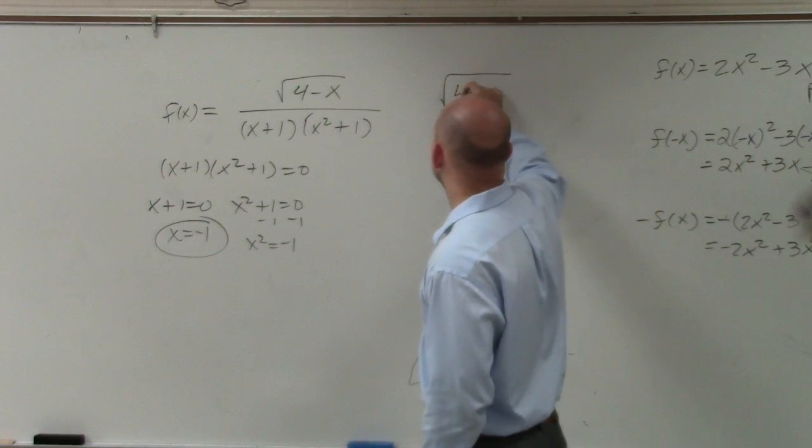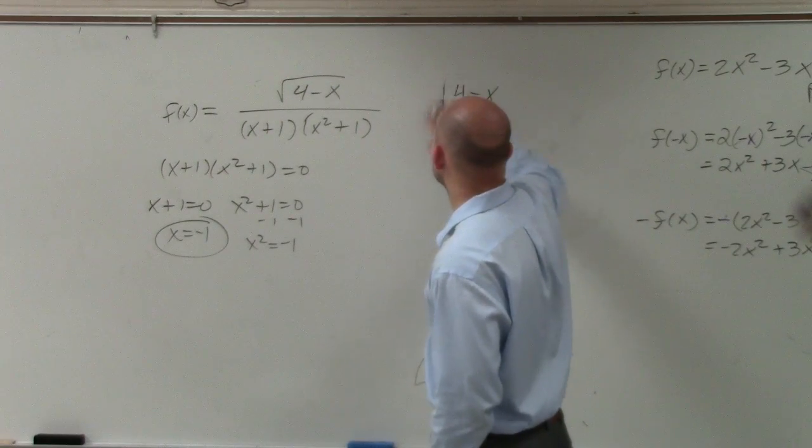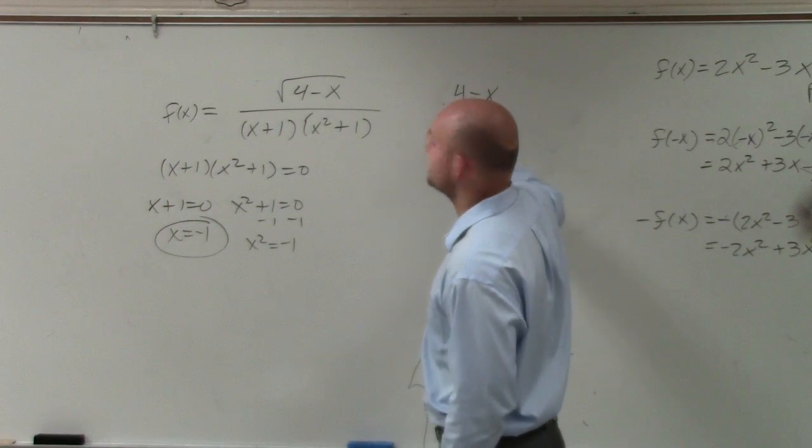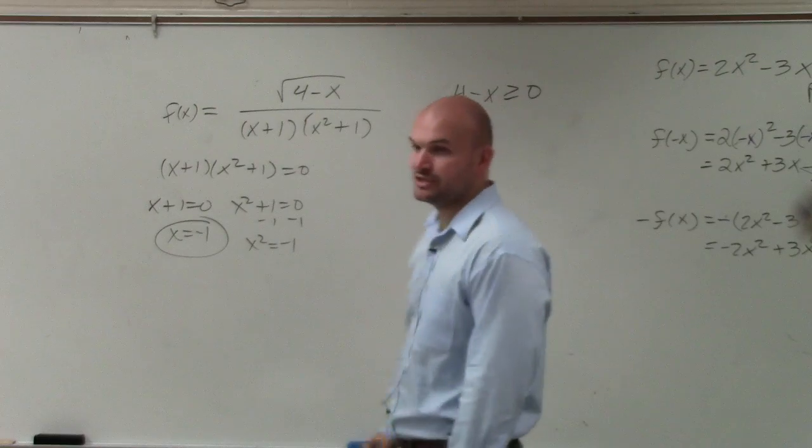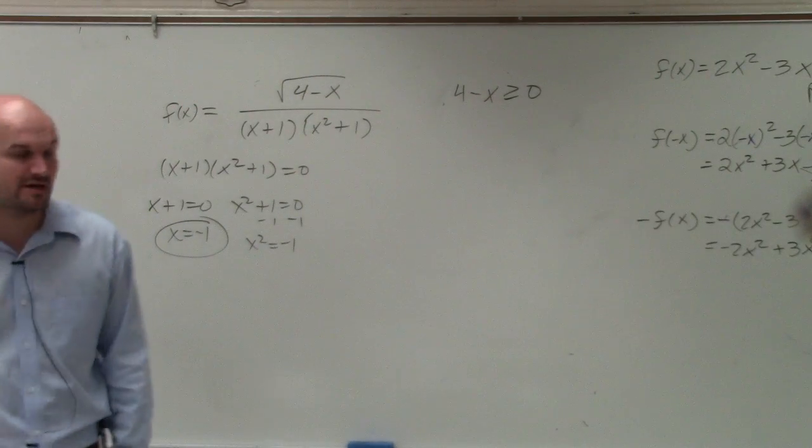And then I have 4 minus x has to be greater than or equal to zero, because you can't have a radical, you can't have numbers that are going to make that negative.